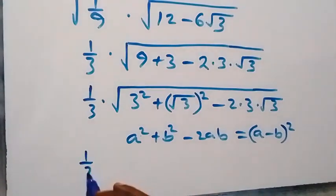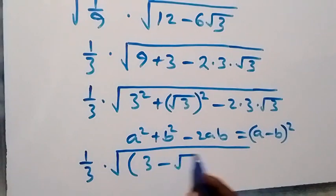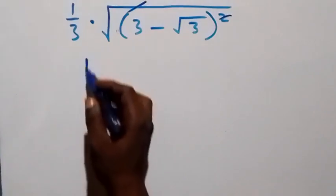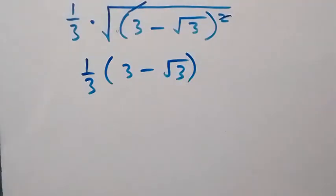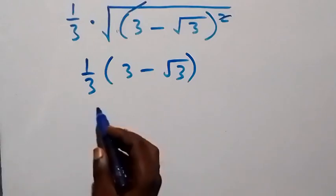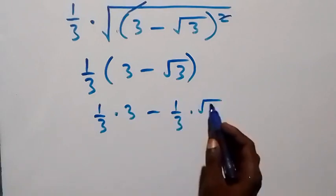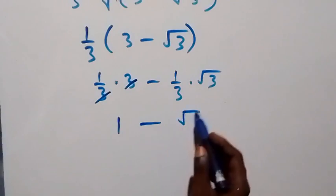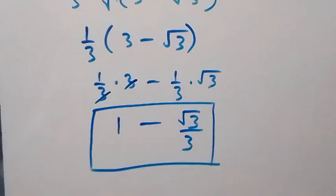What we have now becomes 1 over 3 times square root of (3 minus root 3) squared. The square and square root cancel, leaving us with 1 over 3 times (3 minus root 3). We can use 1 over 3 to open the brackets, giving 1 over 3 times 3 minus 1 over 3 times root 3. This simplifies to 1 minus root 3 over 3.